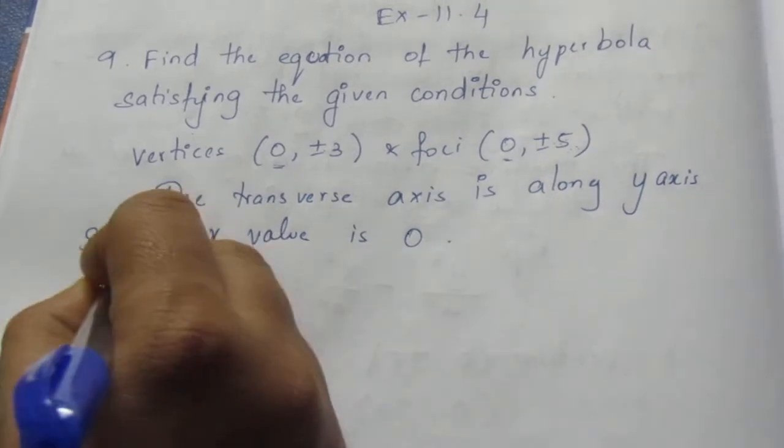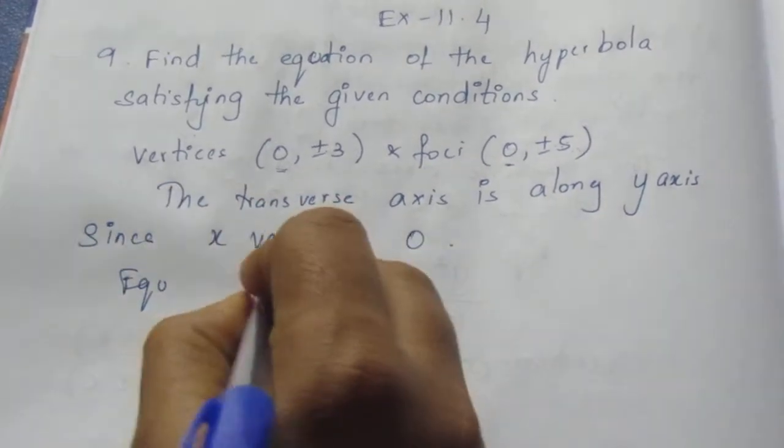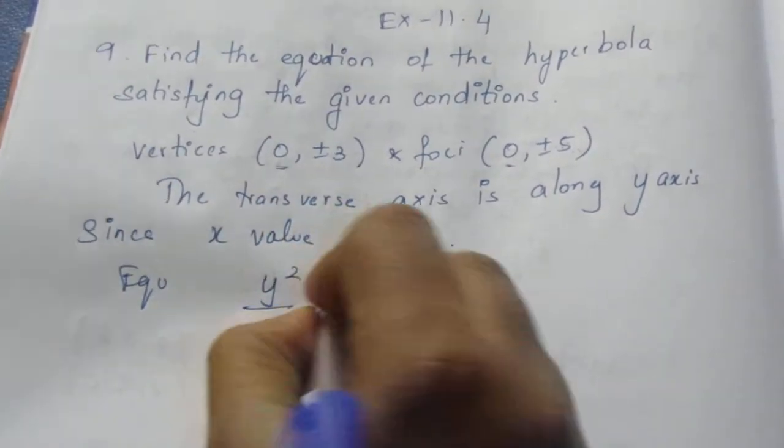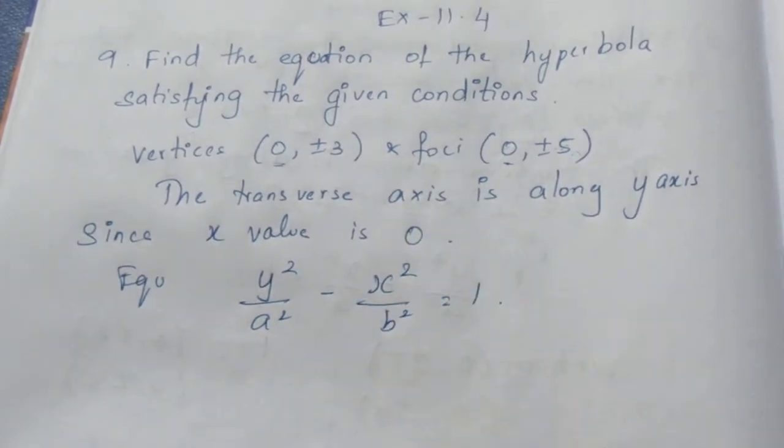Now, the general equation will be y²/a² - x²/b² = 1.